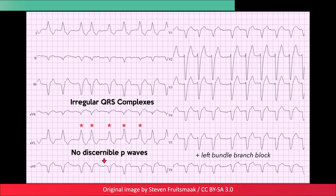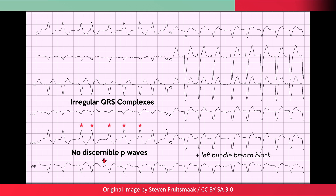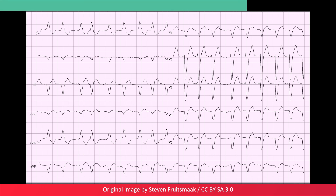On first glance, an ECG like this can be somewhat perplexing. There aren't any P waves, and the QRS complexes are wide. This isn't ventricular tachycardia, but atrial fibrillation with aberrancy. More specifically, this patient has a wide QRS complex due to left bundle branch block.